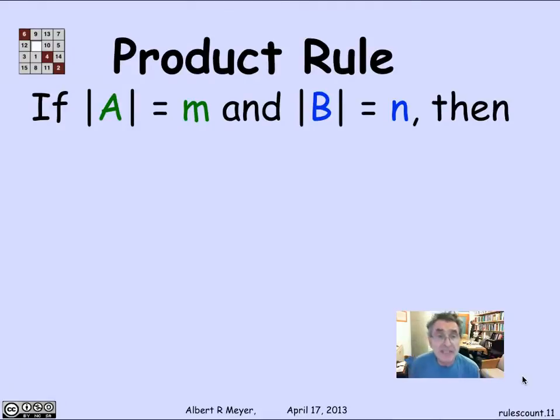More generally, if I have a set A of size M and a set B of size N, then A cross B, remember that's the set of ordered pairs where the first element is from A and the second element is from B, the size of A cross B is, the vertical bars remember mean size, is equal to M times N.